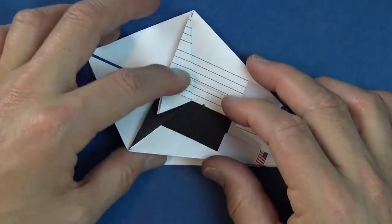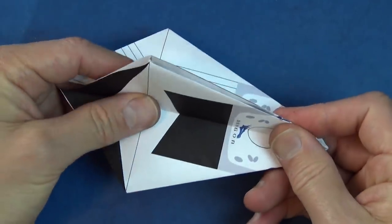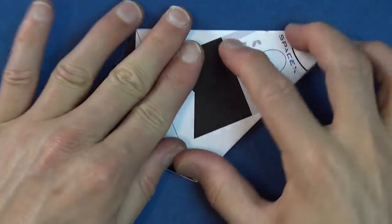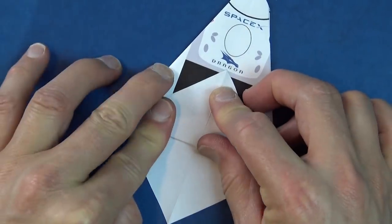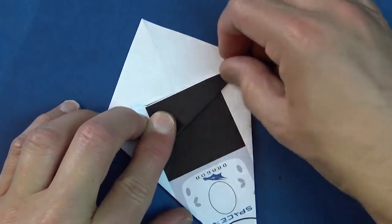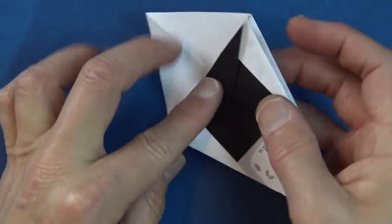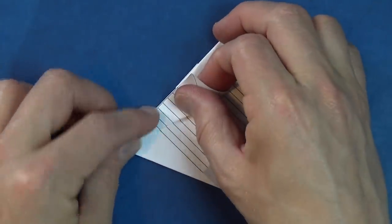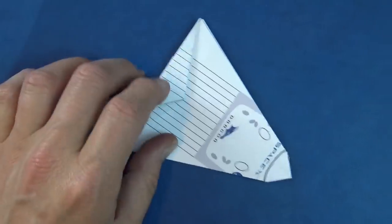Okay. Now bring these two flaps together. And bring these two flaps together. And flatten. And now we're going to repeat on this side. And turn over and repeat on this side. Okay.